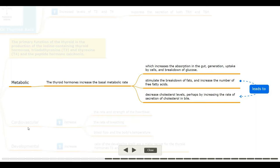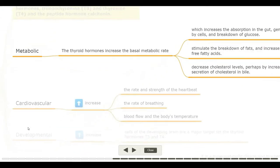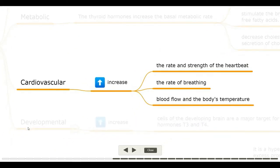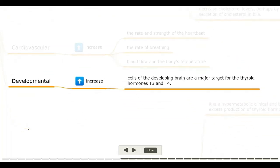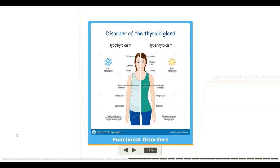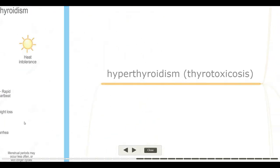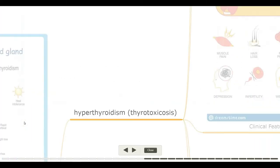Thyroid hormones decrease cholesterol levels, perhaps by increasing the rate of secretion of cholesterol in bile. Cardiovascular effects: they increase the rate and strength of the heartbeat, the rate of breathing, blood flow, and the body's temperature. Developmental effects: cells of the developing brain are a major target for thyroid hormones T3 and T4.